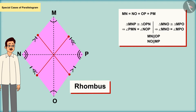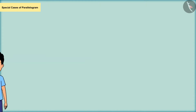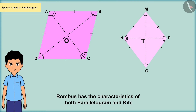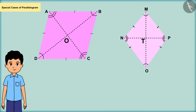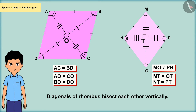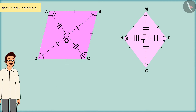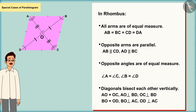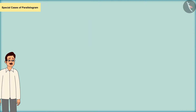The rhombus is a shape with characteristics of both a parallelogram and a kite. The characteristics of a rhombus are: all sides equal, opposite sides parallel, opposite angles equal, and both diagonals bisect each other.